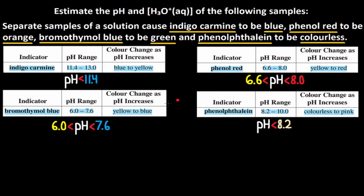Now that we've found what the pH has to be for each indicator, we can estimate the pH. The pH should be a value that works with every condition. To estimate pH, we need to find the minimum and the maximum. The minimum are the left side numbers and the maximum are the right side numbers. The left side numbers are: nothing, 6.6, and 6.0, and nothing. The minimum pH is 6.6 — if our pH was less than 6.6, phenol red wouldn't be orange. The right side numbers are 11.4, 8.0, 7.6, and 8.2. The maximum is 7.6 — if the pH was greater than 7.6, bromothymol blue wouldn't be green. So our pH is between 6.6 and 7.6.